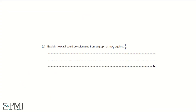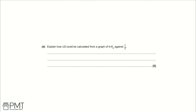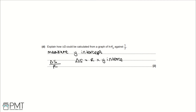Part D. Explain how delta S could be calculated from a graph of ln Kp against 1 over T. In equation 5.1, the y-intercept c equals delta S over R. So to find delta S, first measure (or extrapolate to find) the y-intercept of the graph, then multiply the y-intercept by R. You get one mark for identifying the y-intercept and one mark for stating that it must be multiplied by R.